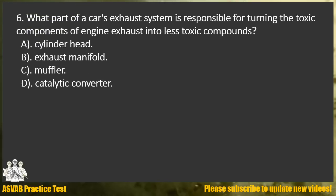Question 6. What part of a car's exhaust system is responsible for turning the toxic components of engine exhaust into less toxic compounds? A. Cylinder head. B. Exhaust manifold. C. Muffler. D. Catalytic converter.